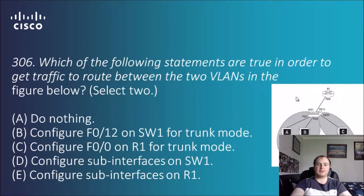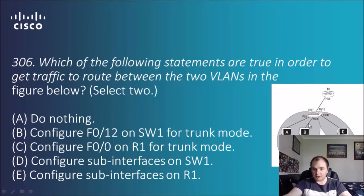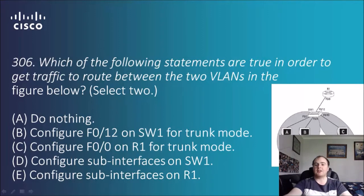For question R6, which of the following statements are true in order to get traffic to route between the two VLANs in the figure below? Select 2. So we've got a router here going at FastEthernet0 going to a switch for port 12, and then ports 2 and 3 are going to the accounting VLAN, and switch port 10 is going to the marketing VLAN by the looks of that.